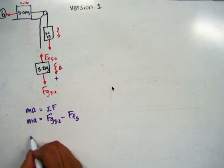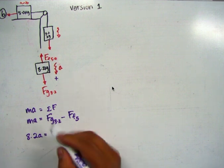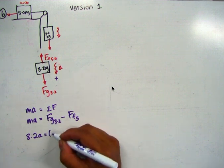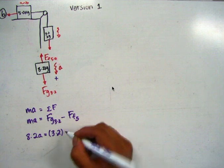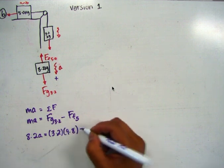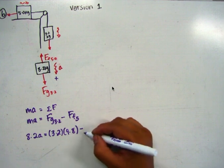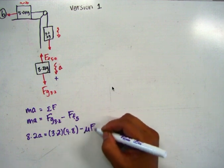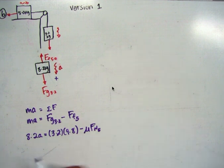So I'm going to say this becomes Fg on the 3.2 kilogram mass minus the force of friction on the 5 kilogram mass. So let's pull these all out. This mass is the total mass, it's 8.2. So 8.2A equals Fg on 3.2 is just 3.2 times G, 9.8 minus, now force of friction is mu Fn of the 5 kilogram block.